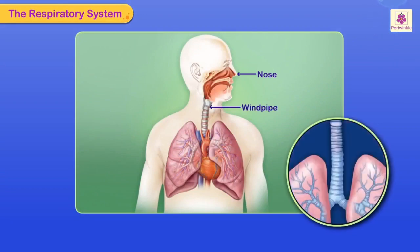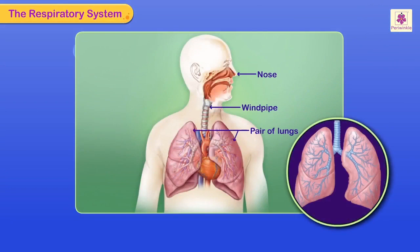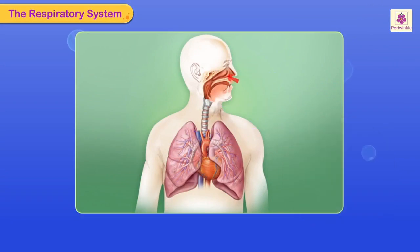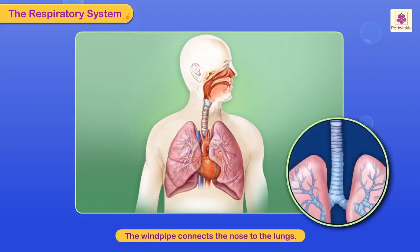The respiratory system consists of the nose, the windpipe, and a pair of lungs. As you breathe in through your nose, air containing oxygen goes in through the windpipe and reaches the lungs. The windpipe connects the nose to the lungs.